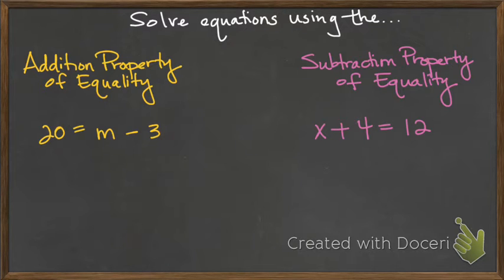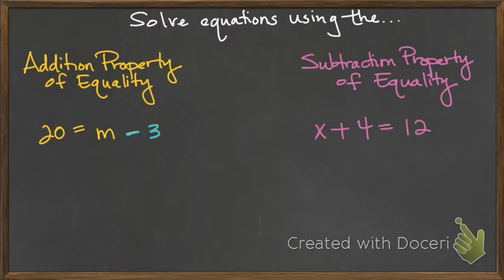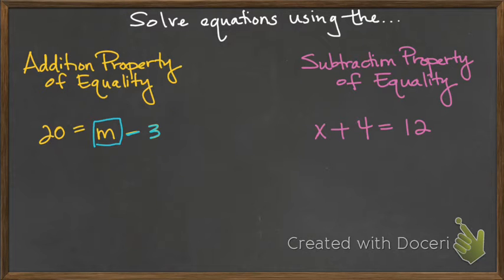So first, the addition property of equality. If I have this equation and I want to solve for m, I need to move this minus 3. You want to think, how do I move the minus 3 to the other side so that m is by itself? In order to move something to the other side of the equal sign, you always do the opposite, the inverse operation.